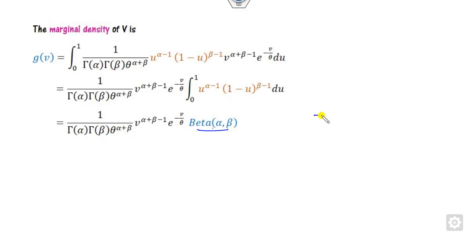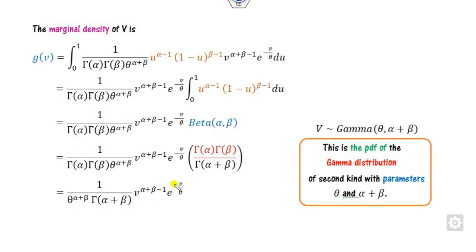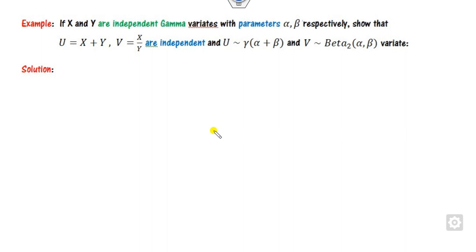Similarly, you can find the marginal density function of v by integrating with respect to u. The constant terms are taken outside. Substituting the beta function identity B(α,β) = gamma(α)·gamma(β)/gamma(α+β), terms cancel and what remains is the gamma distribution — the gamma distribution of the second kind. When θ = 1, it is called the first kind.